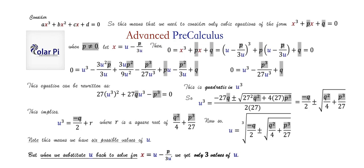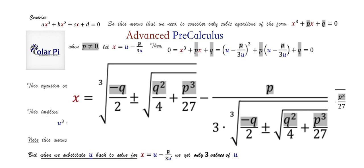We are done finding the cubic formula. We have x = u - p/(3u) and u equals the cube root of our expression. Replacing u in both places with that cube root expression gives us x entirely in terms of p and q from the depressed cubic. That's the cubic formula — you depress your cubic, then plug p and q into it.